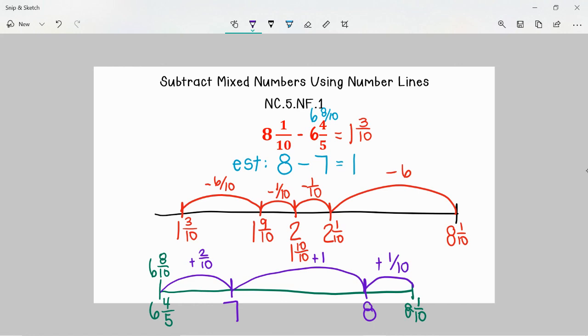So I have been able to find the difference between 6 and 8 tenths and 8 and 1 tenths by using addition. Now the way that I can see what the answer is here is I need to figure out, well how much did I have to jump to get from 6 and 4 fifths to 8 and 1 tenths. So here I had 2 tenths, here I had 1 hole, so we would be at 1 and 2 tenths. And then here I had another tenth, so we would be at 1 and 3 tenths, which is the same thing as what we got up here.